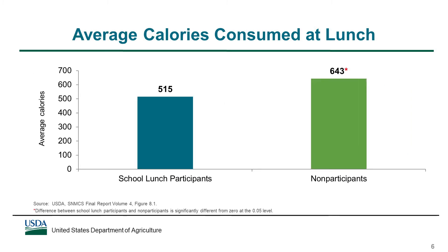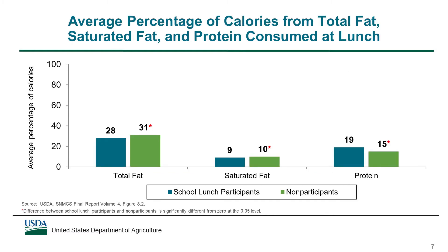School lunch participants consumed lunches that provided significantly fewer calories than the lunches consumed by non-participants. This slide compares students' intakes of total fat, saturated fat, and protein at lunch as a percentage of the calories consumed at lunch. The lunches consumed by school lunch participants provided a smaller percentage of calories from total fat and saturated fat than the lunches consumed by non-participants. For example, the lunches consumed by participants contained 28% of calories from total fat, compared to 31% of calories from total fat in the lunches consumed by non-participants. Participants' lunches also provided a larger percentage of calories from protein relative to non-participants' lunches.